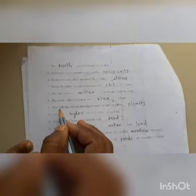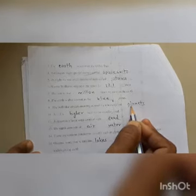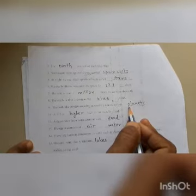The ball-like objects moving around the sun are called planets. Now, the ball-like objects that move around the sun, they are known as planets. Planets move around the sun.